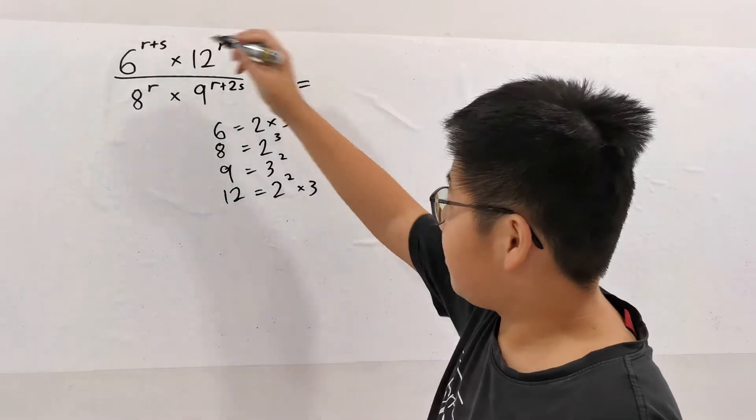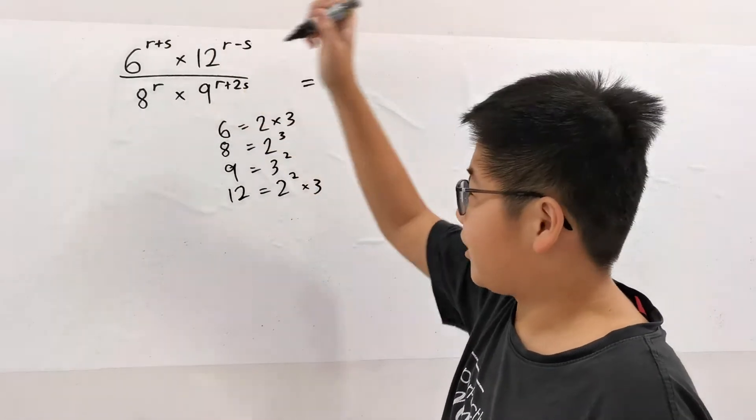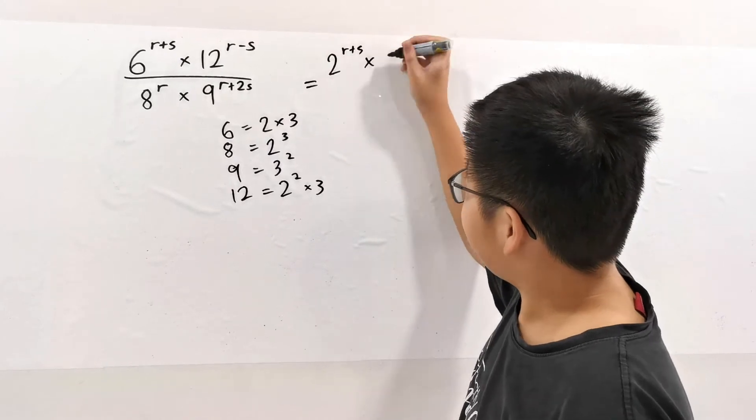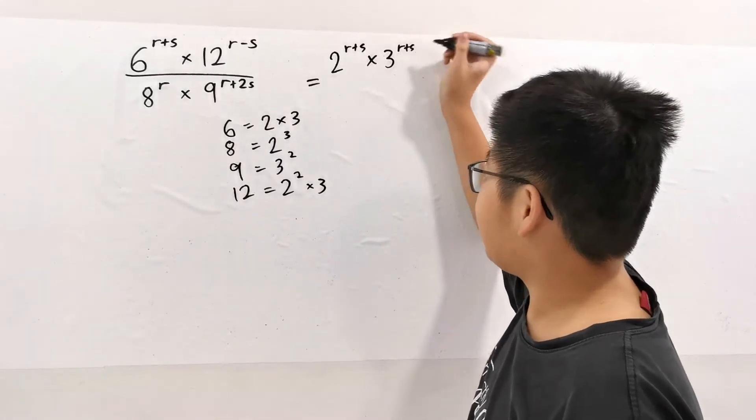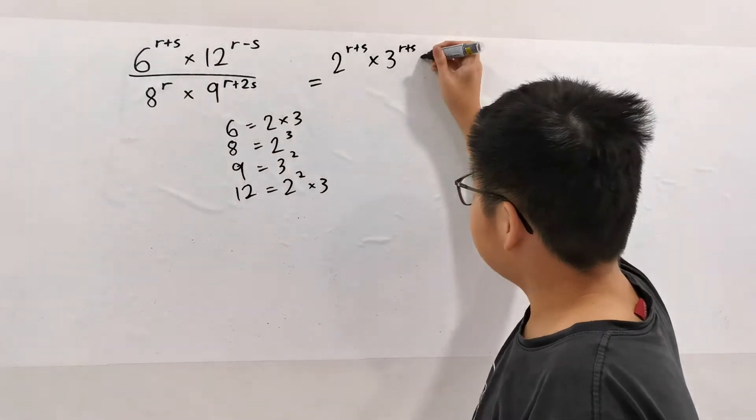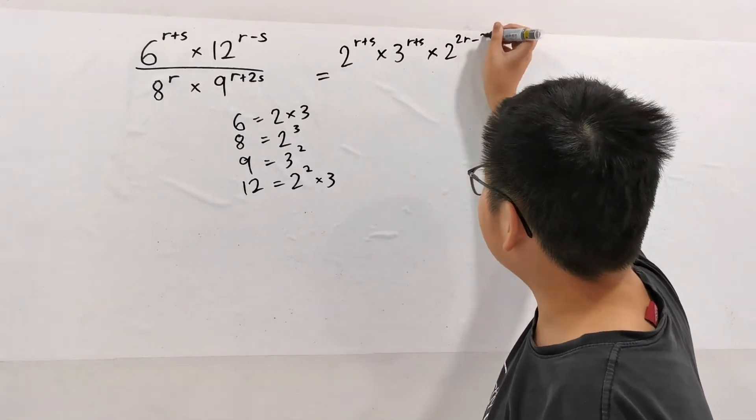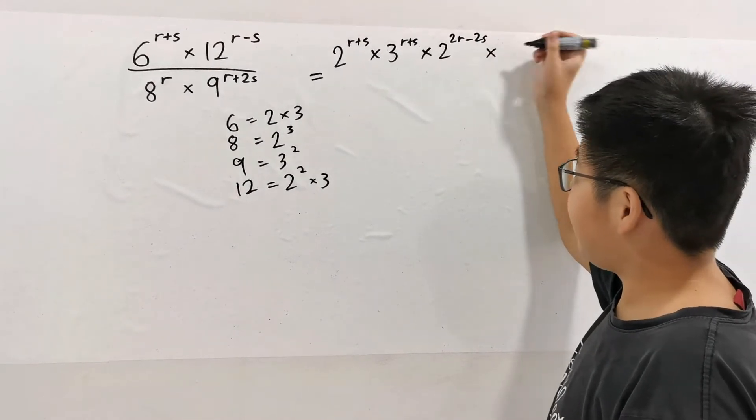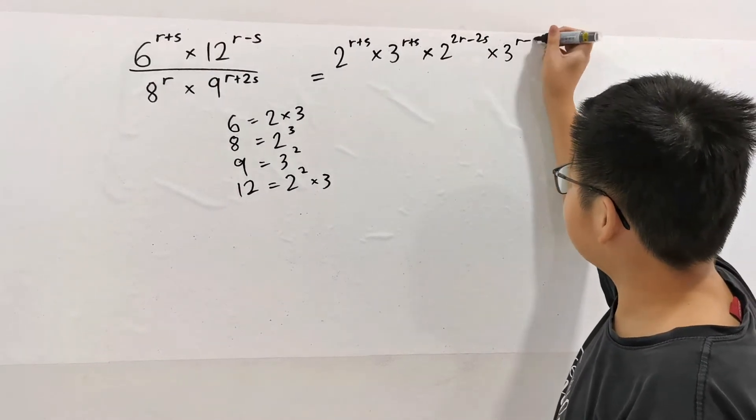This is all very interesting. Now what we do is convert this fraction, so we have 2^(R+S) times 3^(R+S) times 2^(2R-2S), because the 2 here is squared, and then times 3^(R-S).